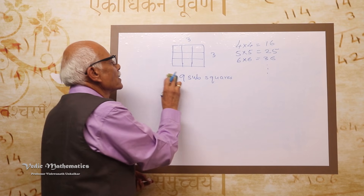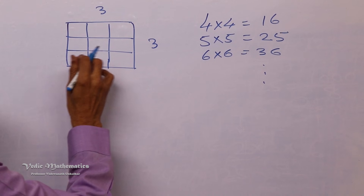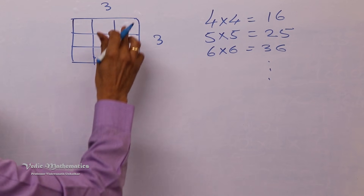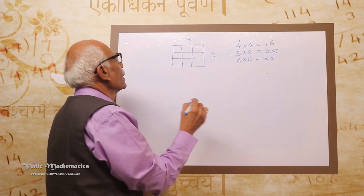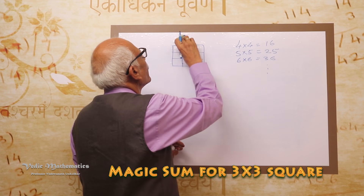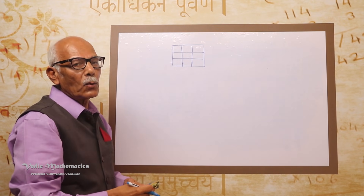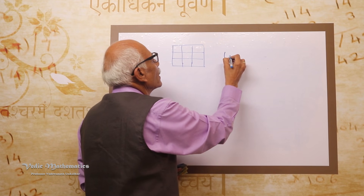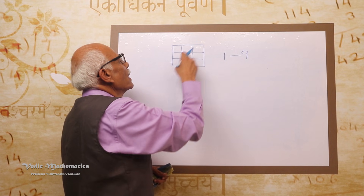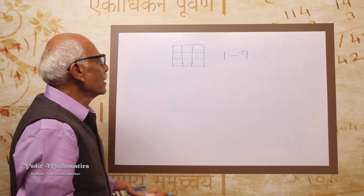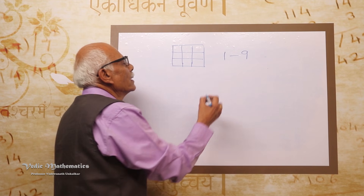You may have come across such squares filled with numbers. In a magic square, the numbers in the sub-squares have the same vertical, horizontal, and diagonal sum. Let us start with a 3 by 3 square. Since it contains 1 to 9, we can fill the numbers from 1 to 9 in such a way that the sum vertically, horizontally, and diagonally will be the same. There are many ways to fill such numbers, but here I am dealing with the Vedic method.